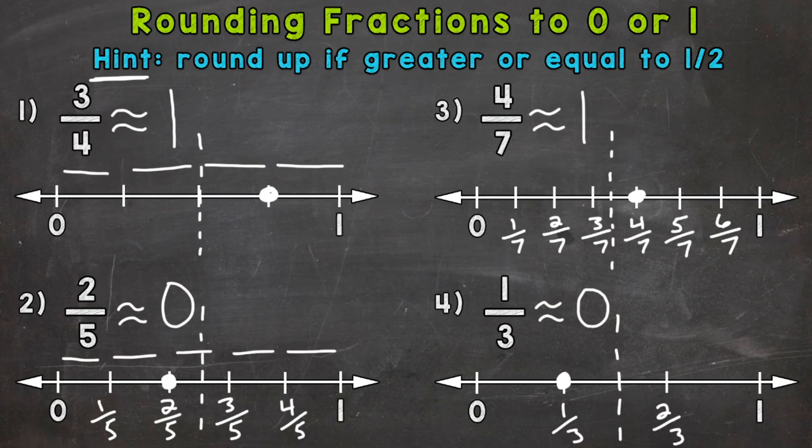The most important part of this video is understanding that we round a fraction up if it's greater or equal to a half. Now, the equal to is a common question. So if you have like 2 fourths or just 1 half even, anything equivalent to a half, that rounds up. So there you have it. There's how you round fractions that are between 0 and 1 to 0 or 1.